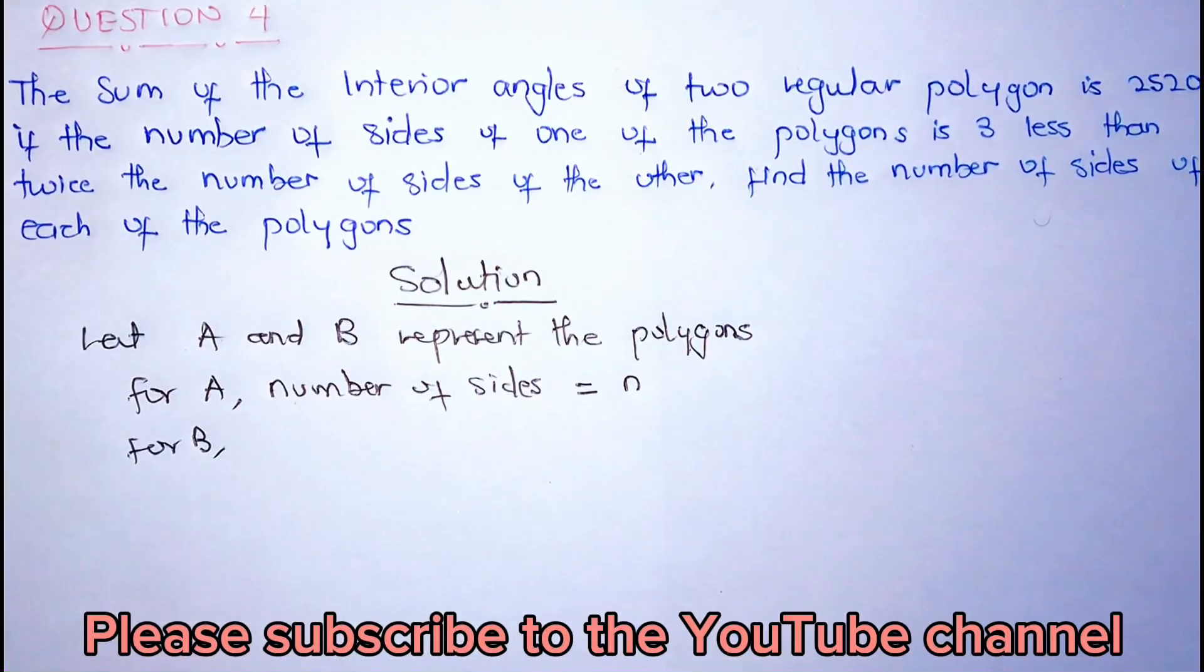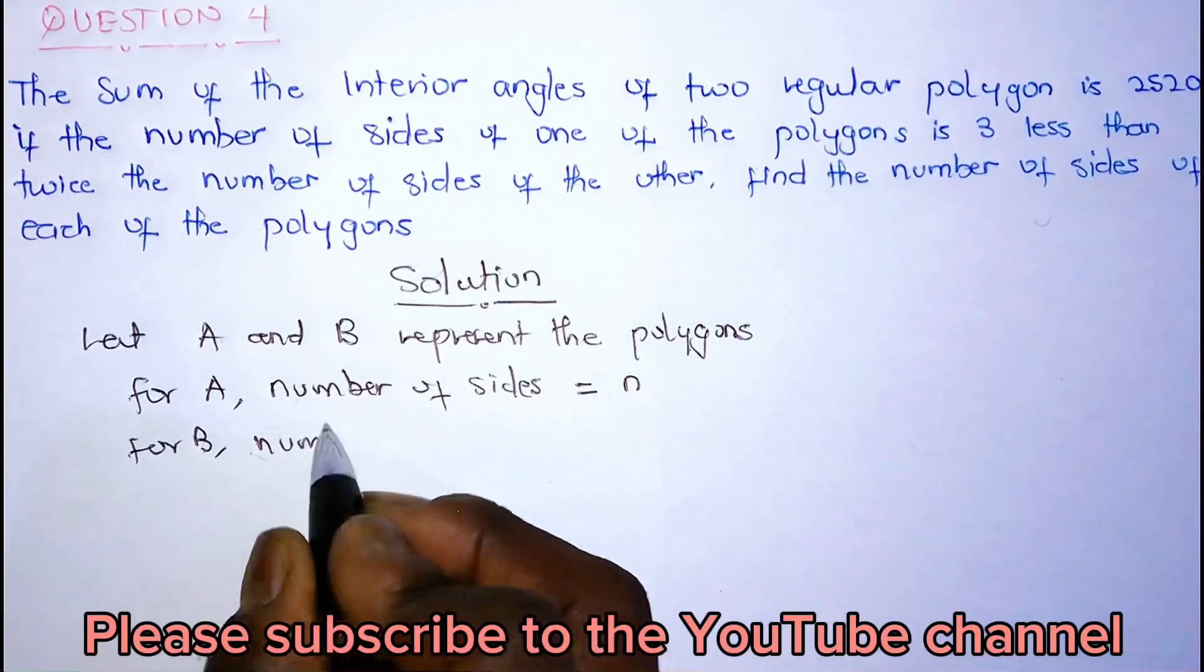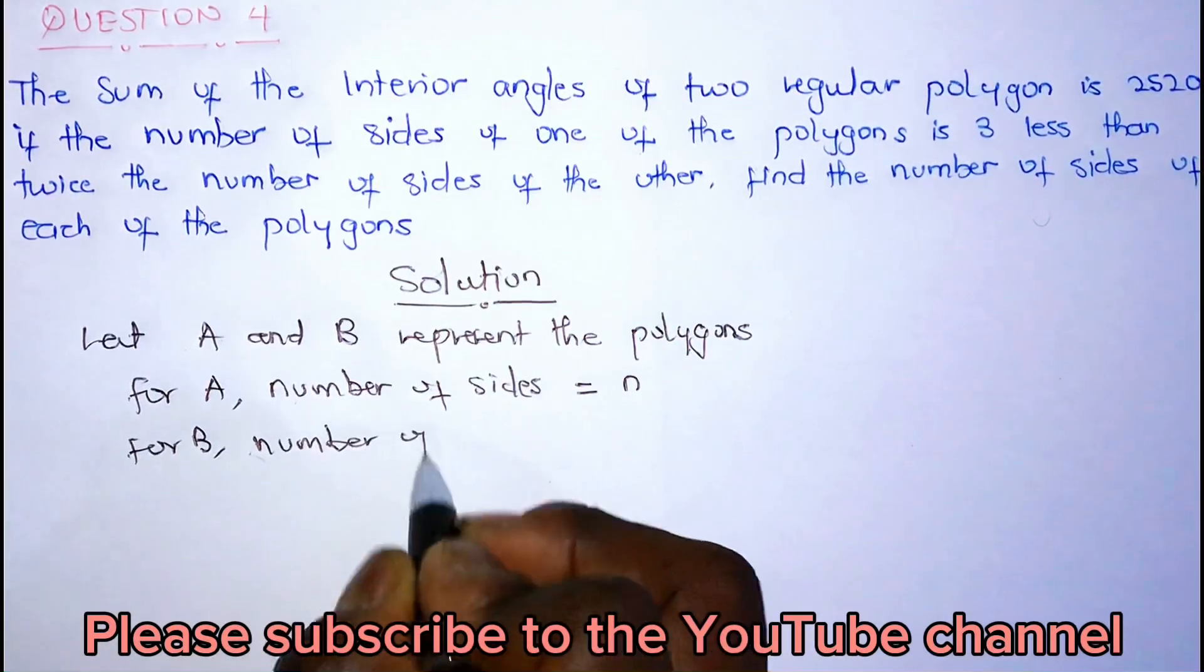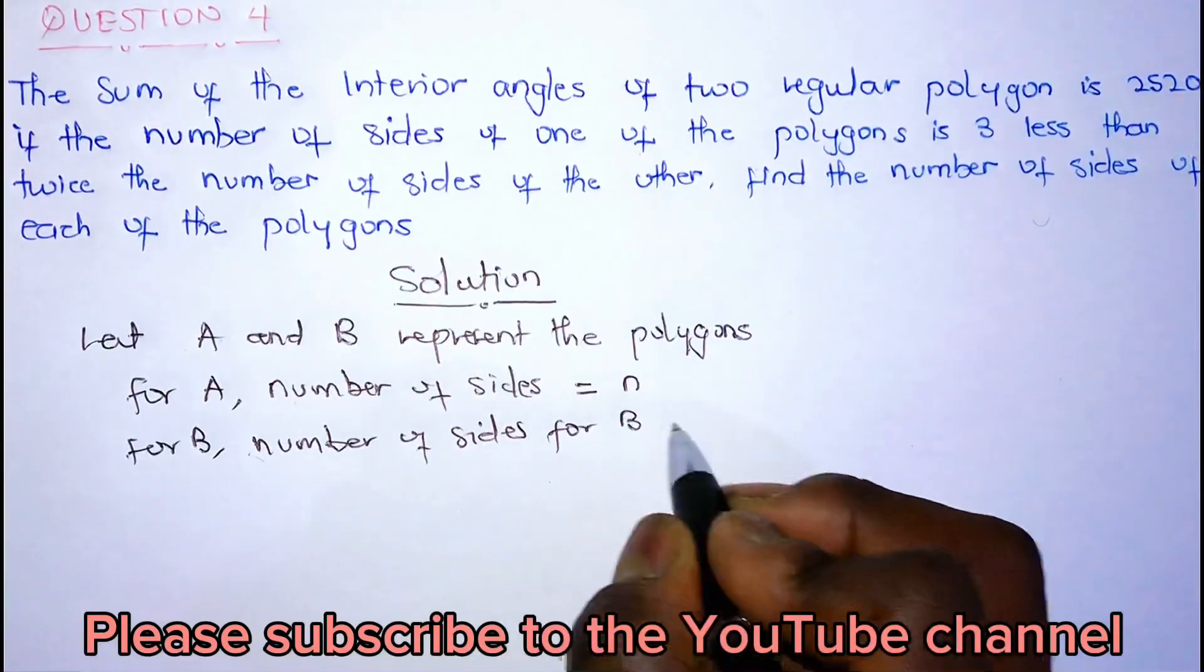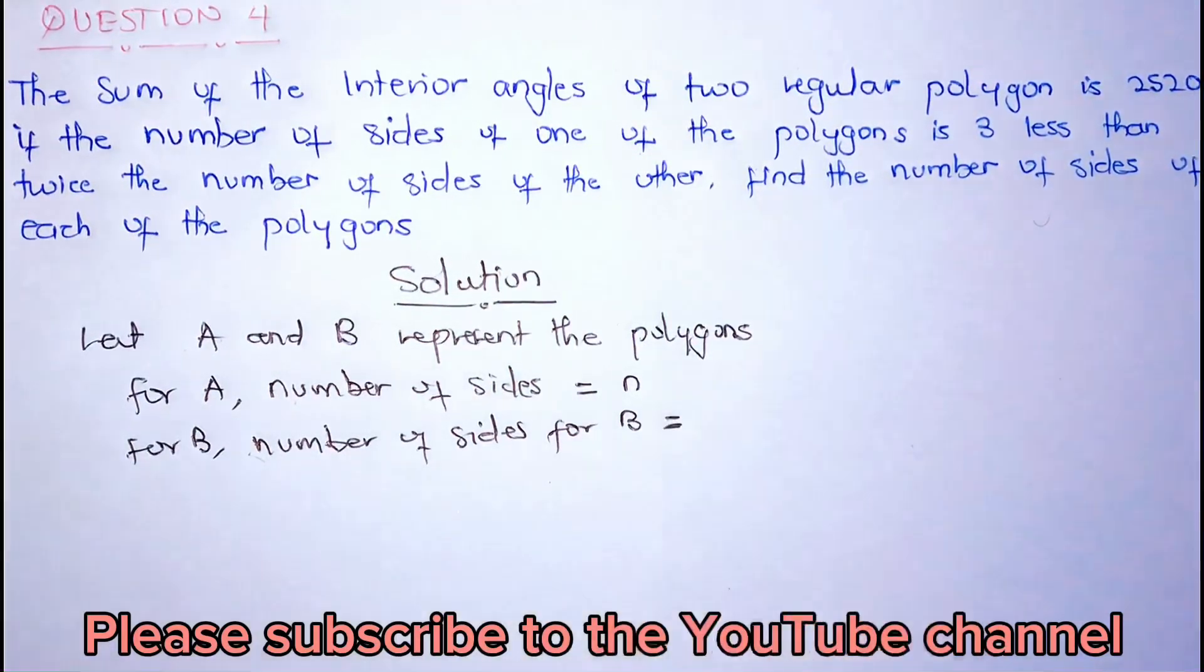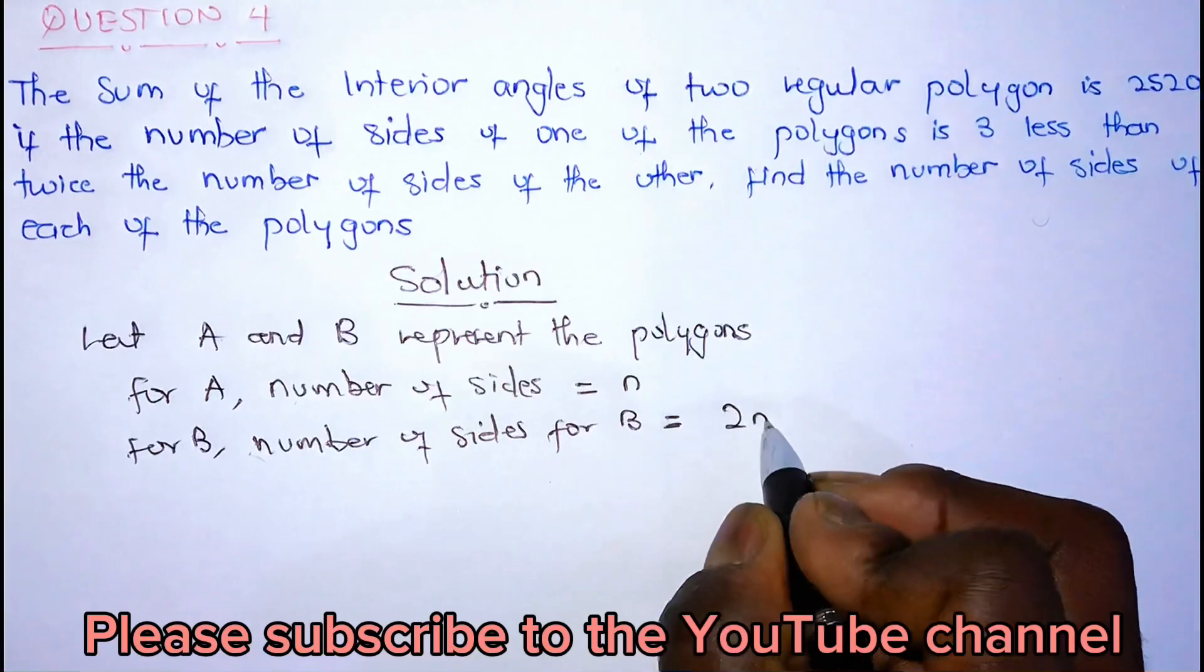Now, if the number of sides of one of the polygons is 3 less than twice of the other, so number of sides for B. Now this is 3 less than twice the number of sides of the other. So if the other is N, twice of the N is going to be 2N.